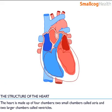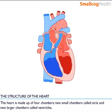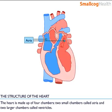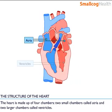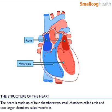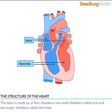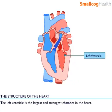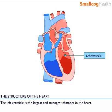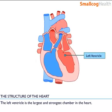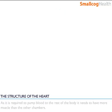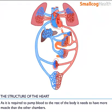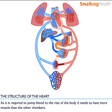The heart is made up of four chambers: two small chambers called atria and two larger chambers called ventricles. The left ventricle is the largest and strongest chamber in the heart. As it is required to pump blood to the rest of the body, it needs to have more muscle than the other chambers.